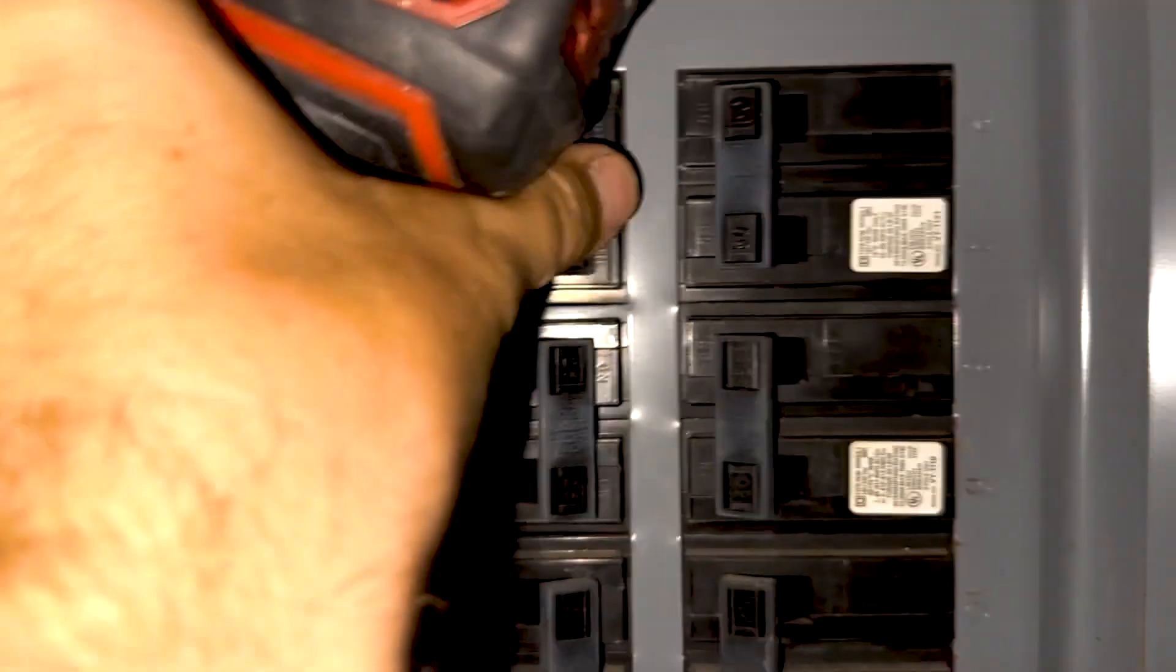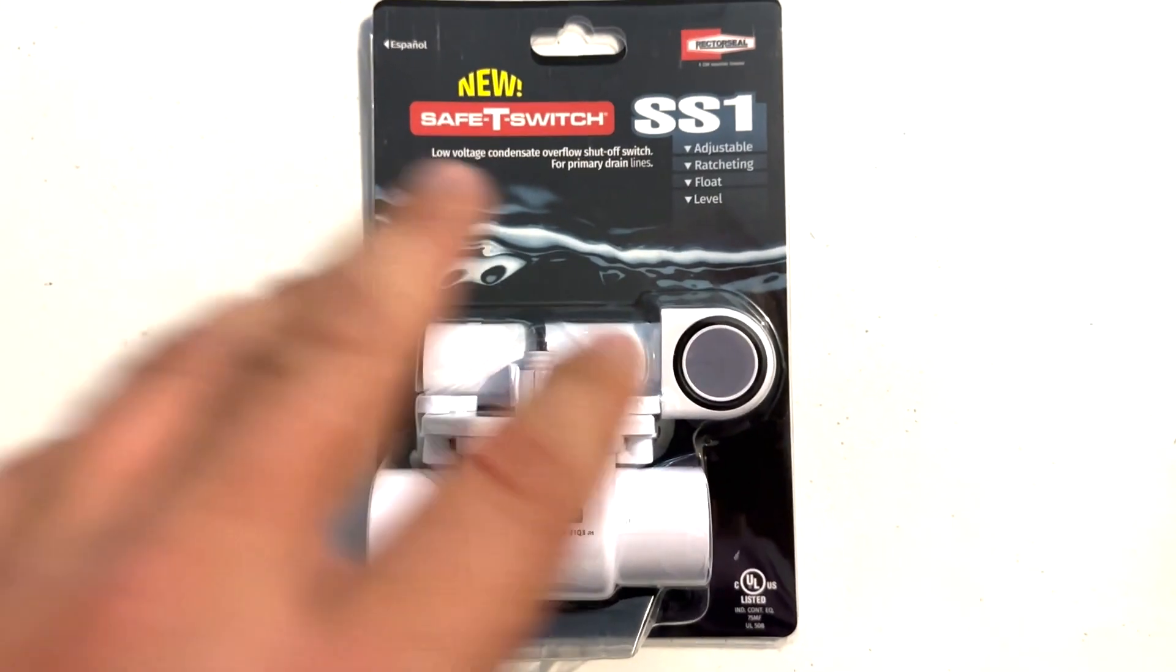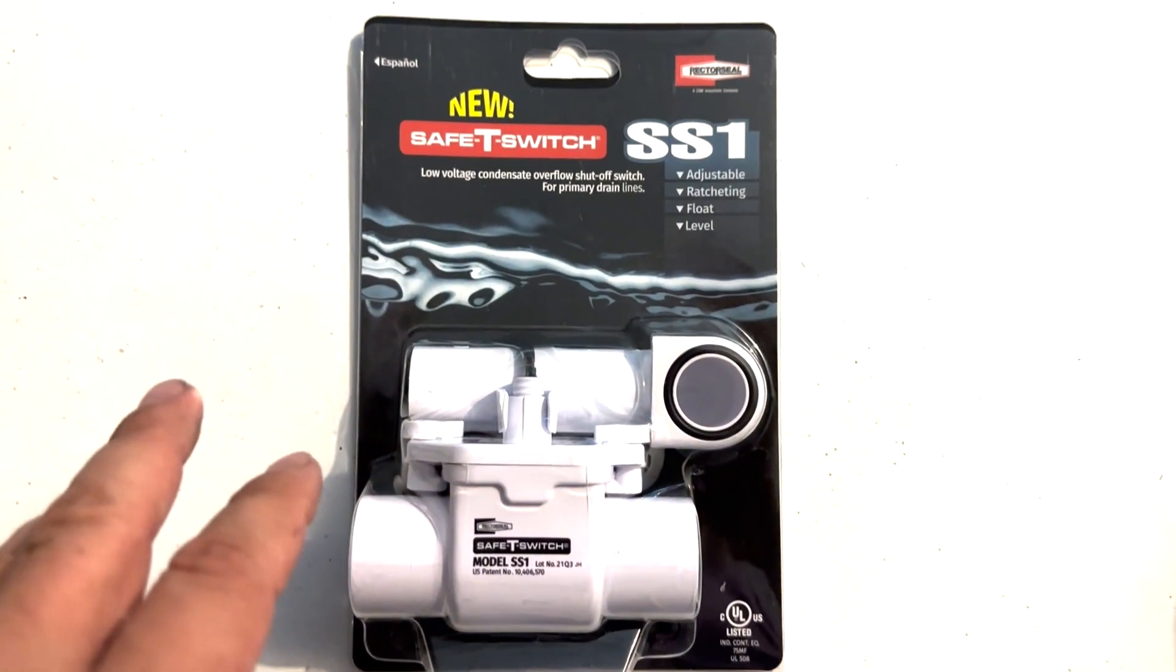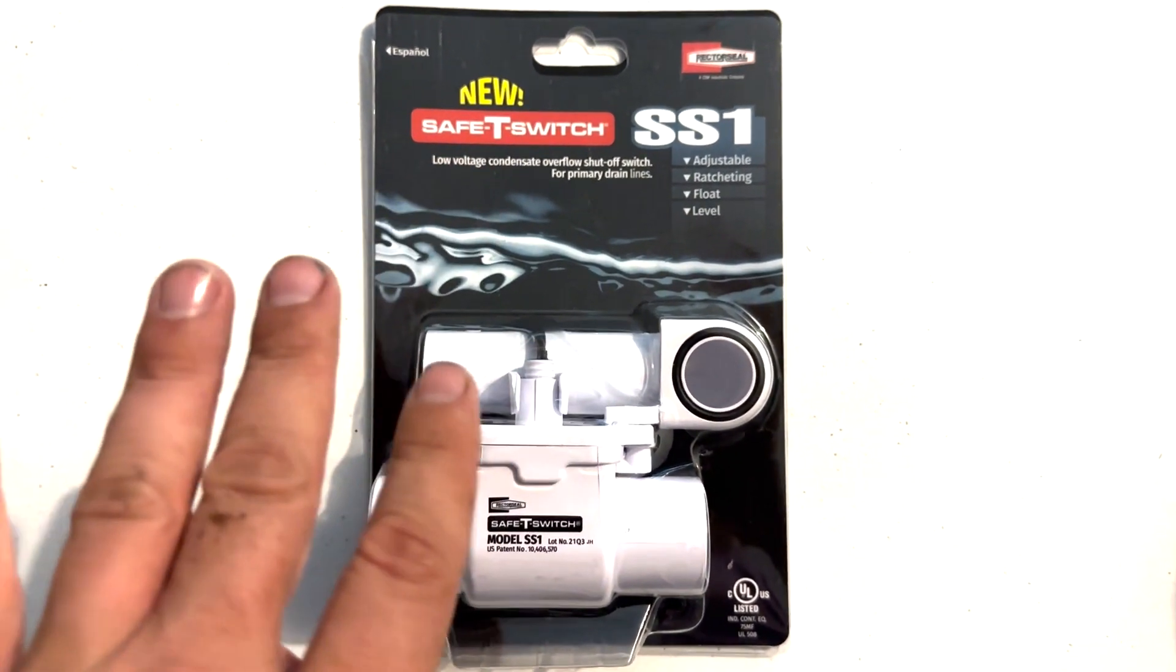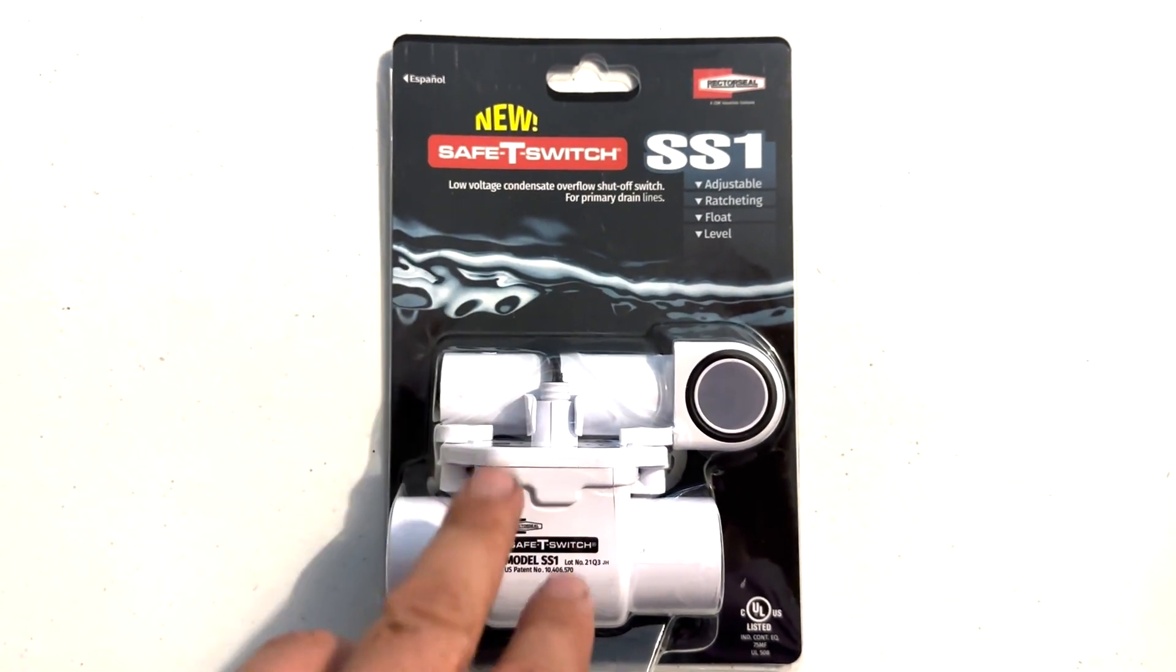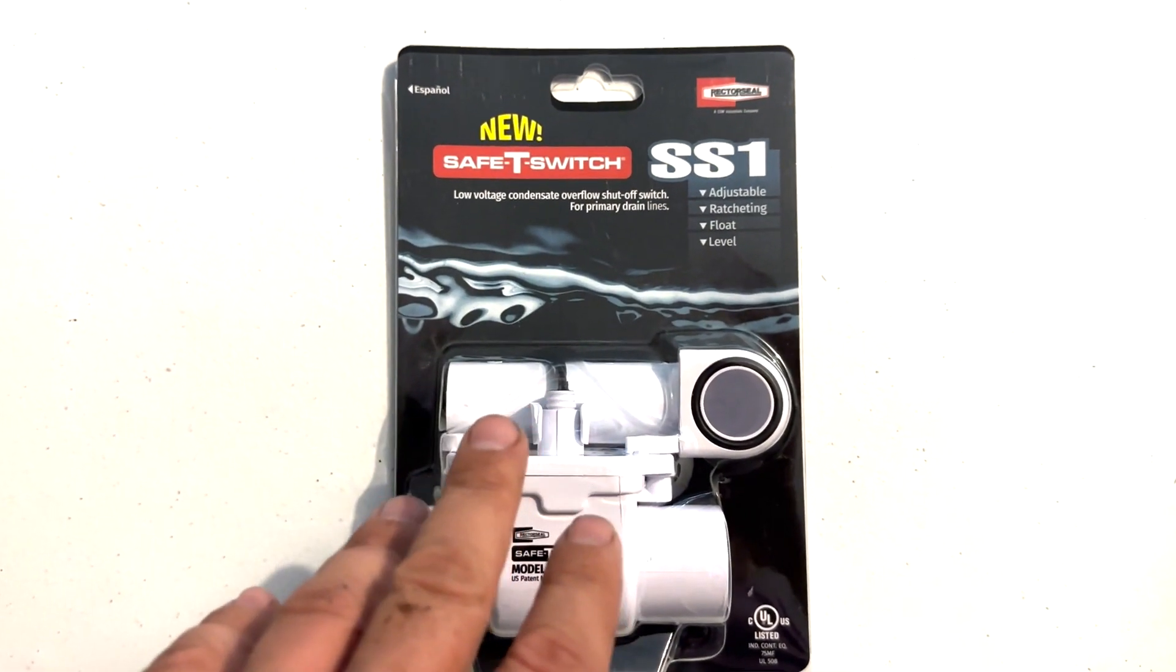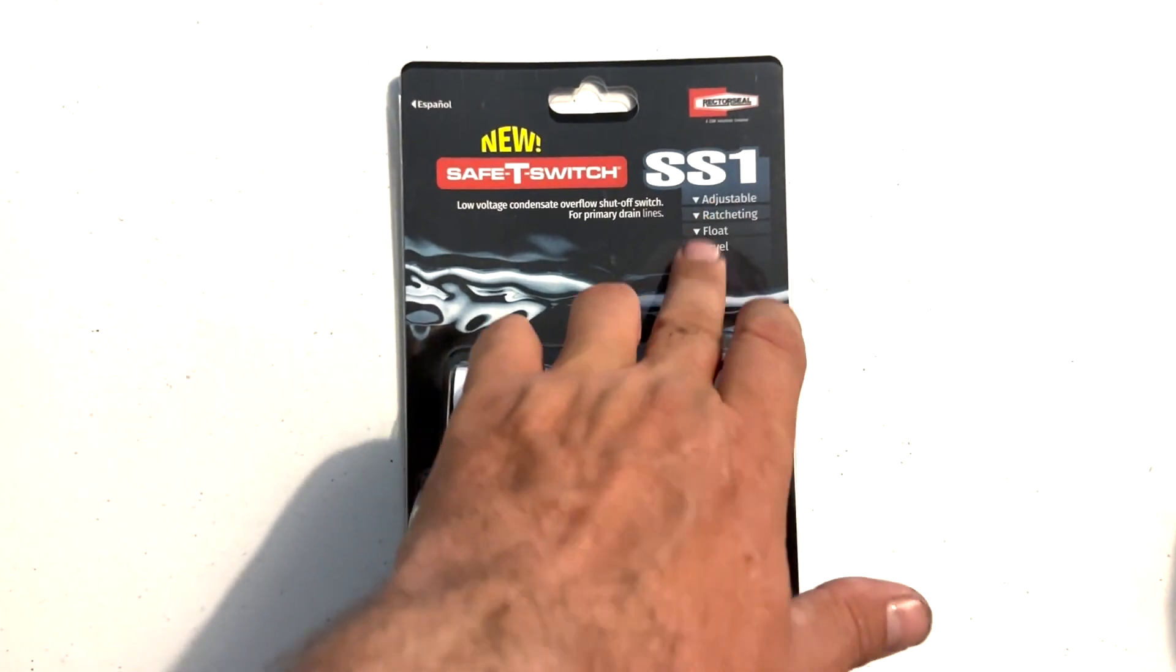So the first thing you want to do is shut off the breaker that goes to your air handler. There it is, we're going to shut that off. So here's the safety switch we're going to be putting in today. I will put a link in the description section or something comparable. This is an SS1 switch.